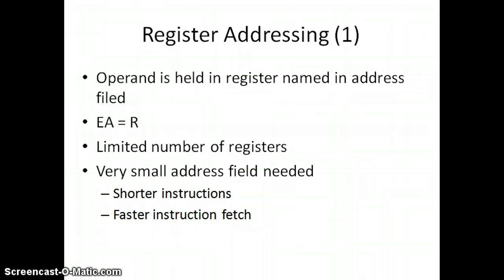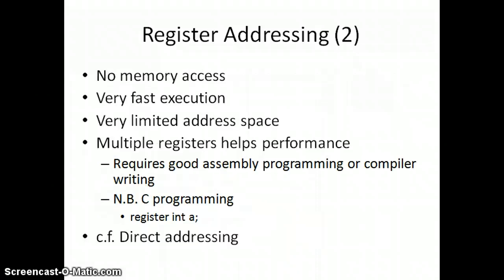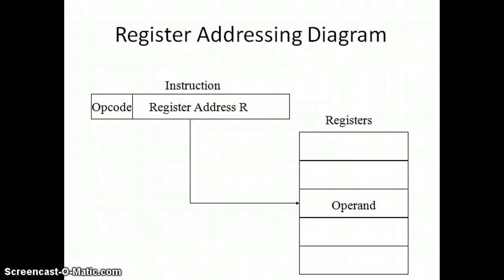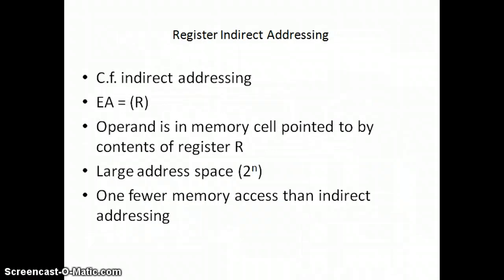Next comes register addressing mode. In register addressing mode, we are directly accessing the data from the registers — the register values are directly specified in the register. Coming to register indirect addressing mode: in register indirect addressing mode, the value is specified in the register and within that register the address is specified indirectly. We get the operand value by indirectly specifying the address with the help of a register.